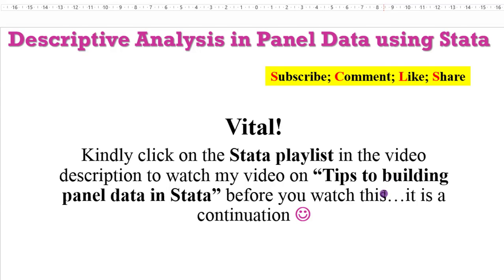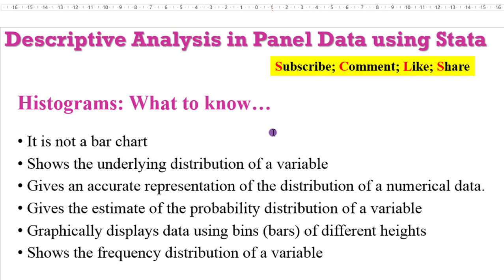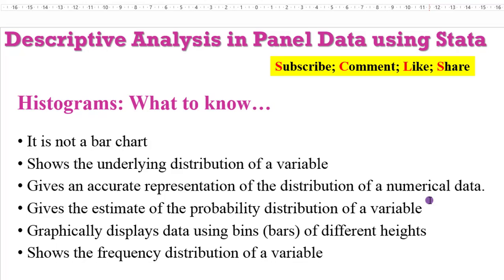So, histograms — what are they and what are they not? A histogram is not a bar chart. A histogram shows the underlying distribution of a variable. It gives an accurate representation of the distribution of numerical data, an estimate of the probability distribution of a variable. It graphically displays data using bins or bars of different heights, showing the frequency distribution of a variable. One thing is common to all these definitions: distribution. A histogram will basically show you how well your variable is distributed among the observations that make up your sample.